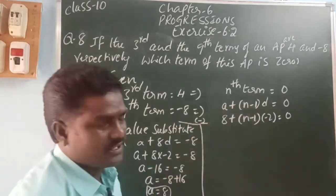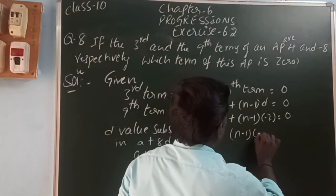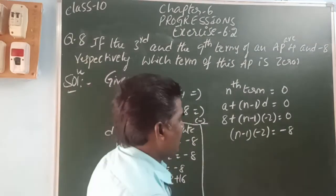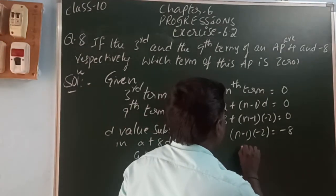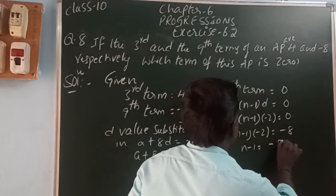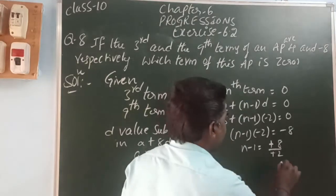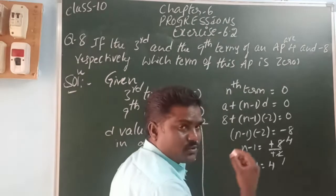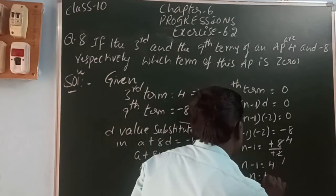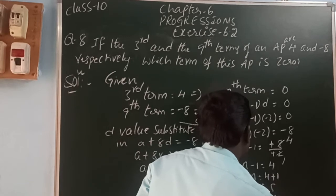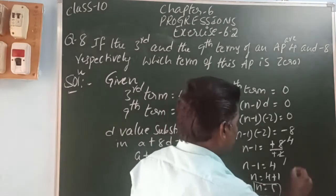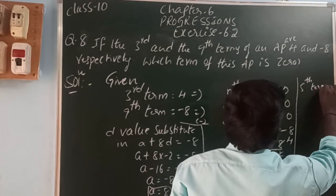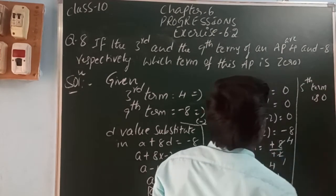Plus 8 is moving to the right side. So, (n minus 1) into minus 2 is equal to 0 minus 8, which is minus 8. Minus 2 is going to divide on the other side. So, n minus 1 is equal to minus 8 by minus 2. Minus minus cancel. So, n minus 1 is equal to 4. Minus 1 is going to the right side as plus. So, n is equal to 4 plus 1 is equal to 5. So, which term is 0? The fifth term is 0 of this AP.